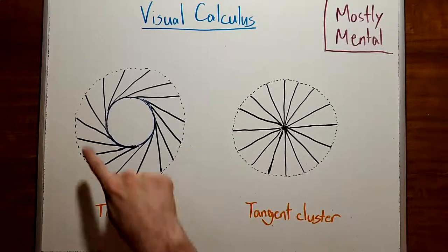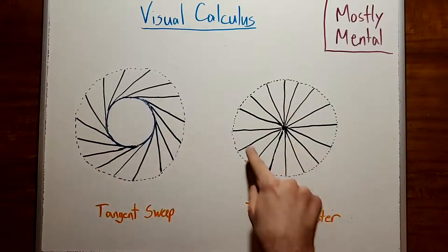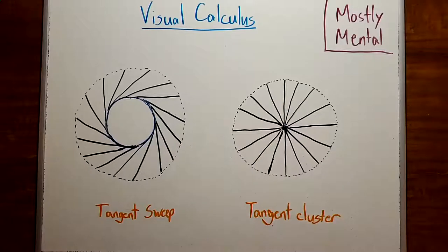And these two shapes are made up of all the same pieces, namely the tangent segments, so they must have the same area. Which brings us to our main result for today.